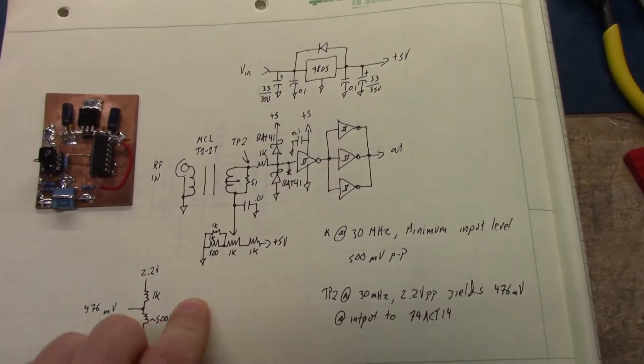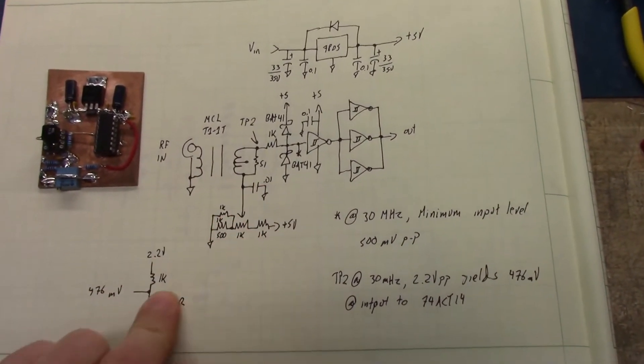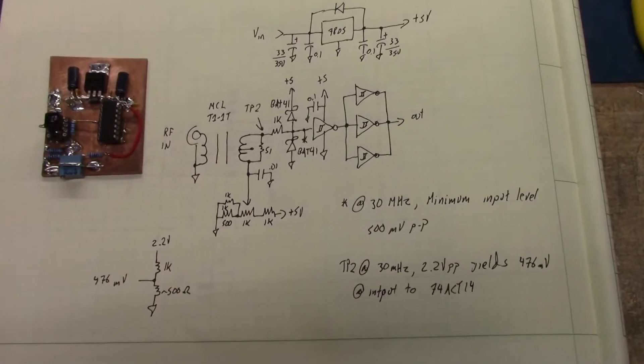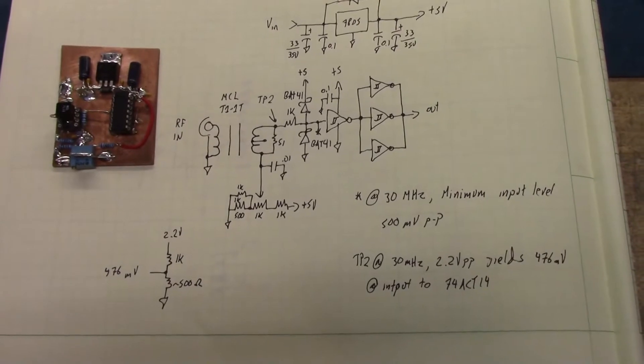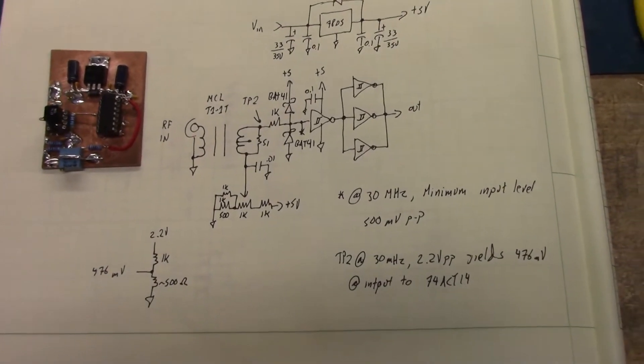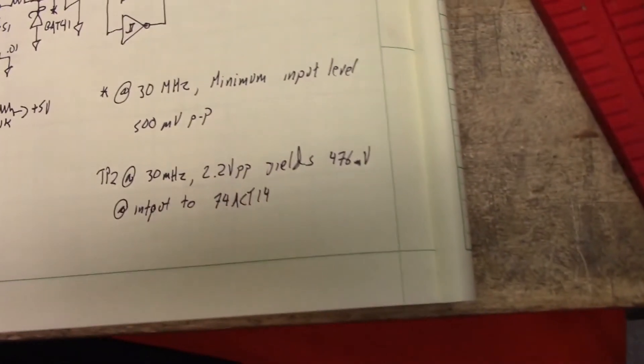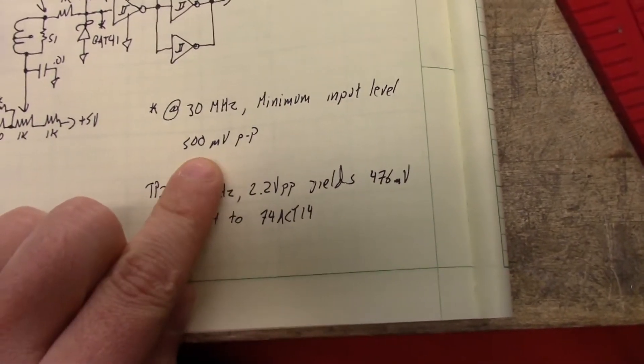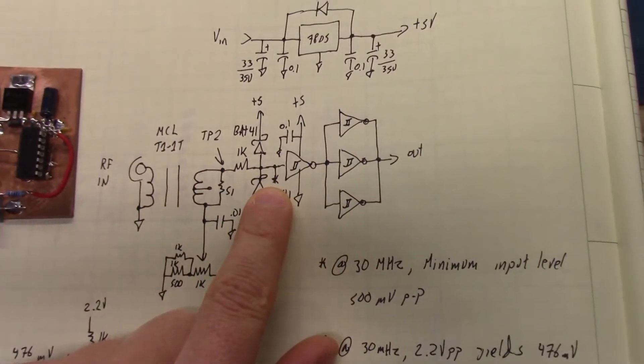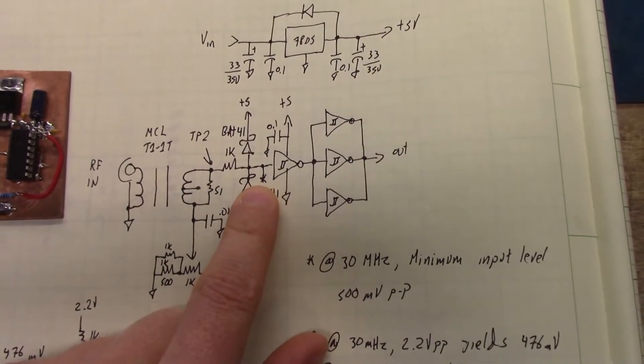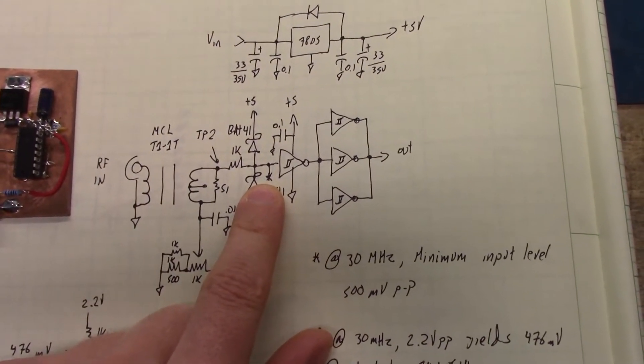Through various revisions in the design, I found that this was actually kind of way overkill and we had to change a couple of things. But the moral of the story is that at 30 megahertz we need about 500 millivolts peak to peak present at the input to this Schottky hex inverter to get a nice symmetrical square wave.